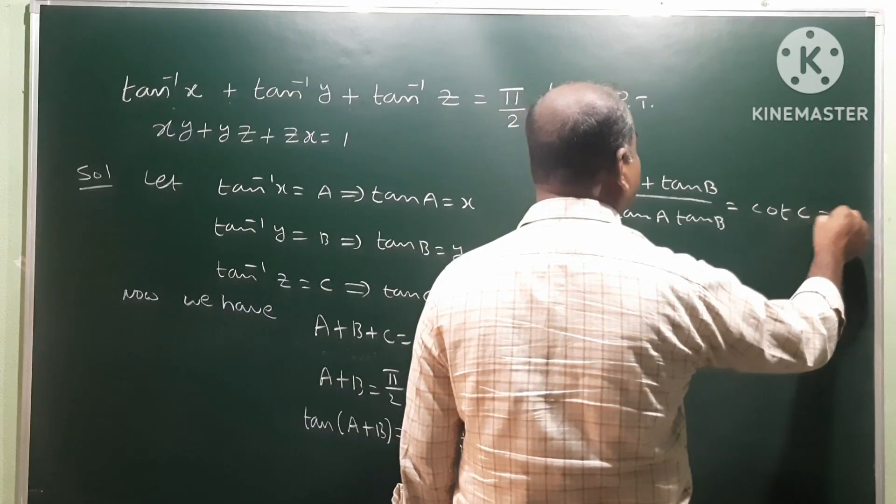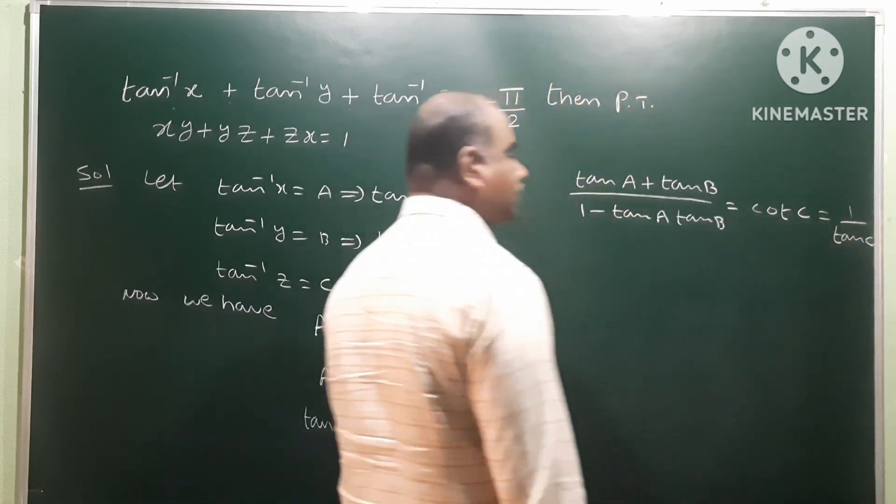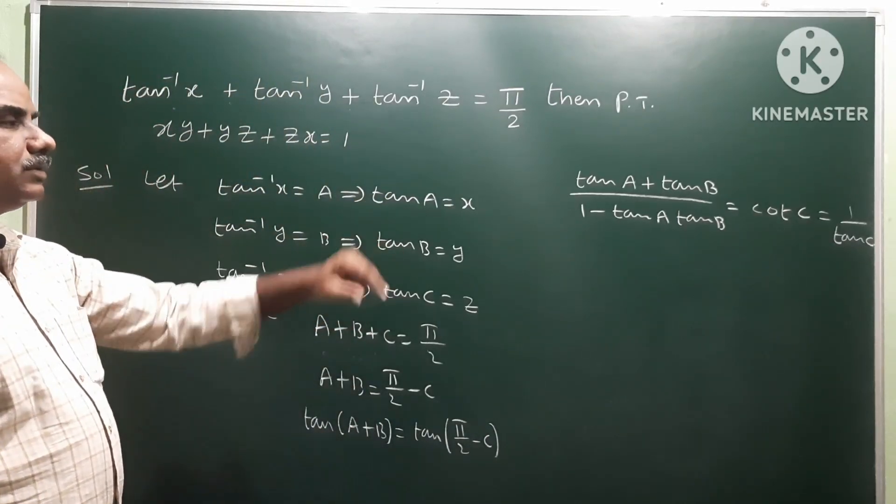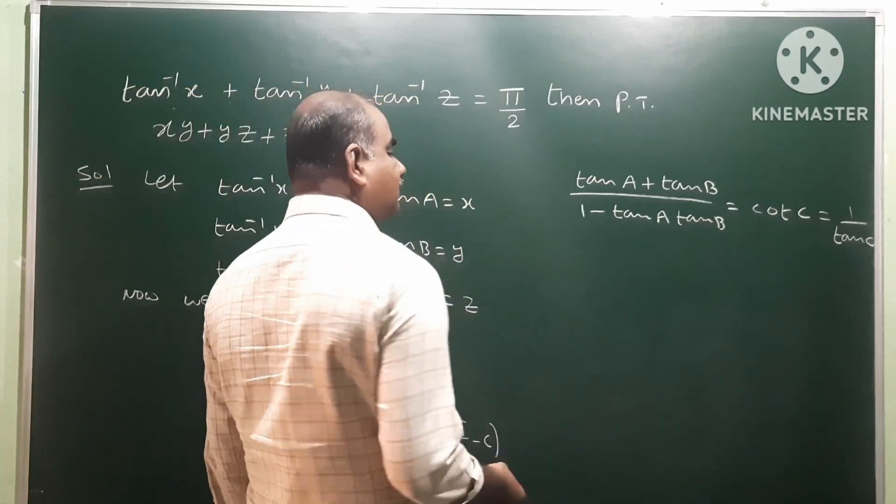And cot c means, so we have to write 1 by tan c. Then we have to write 1 by tan c.